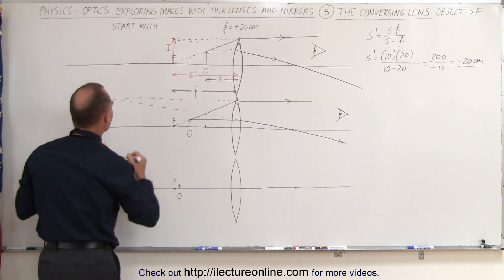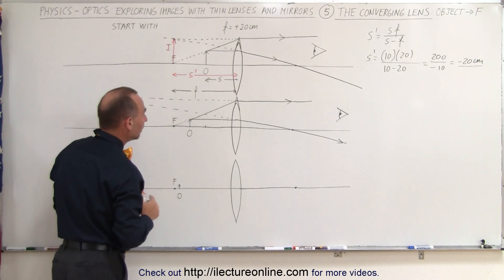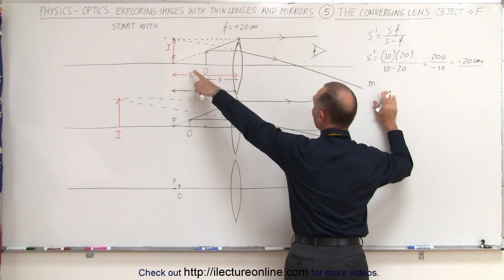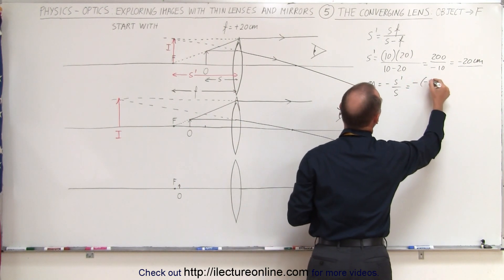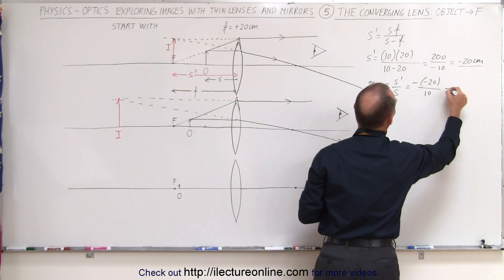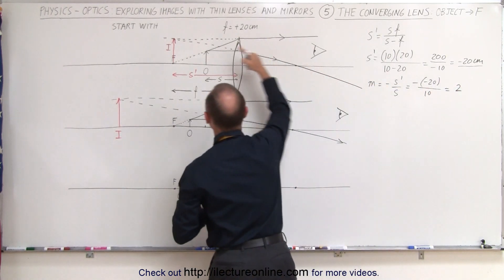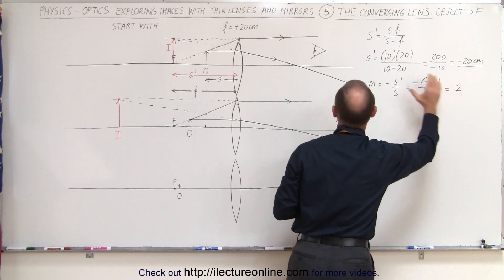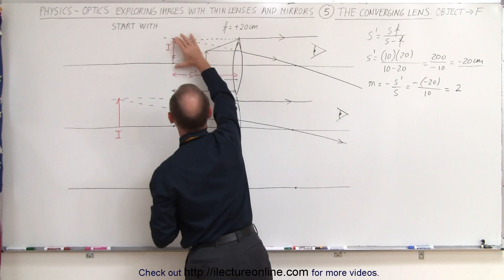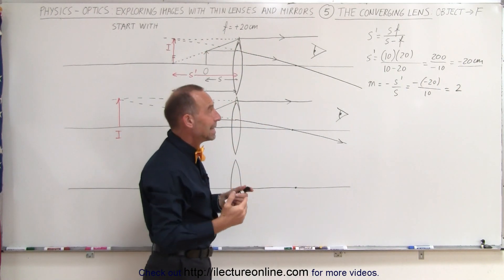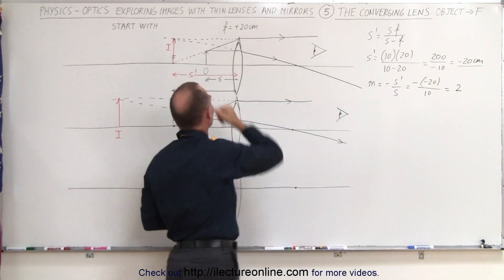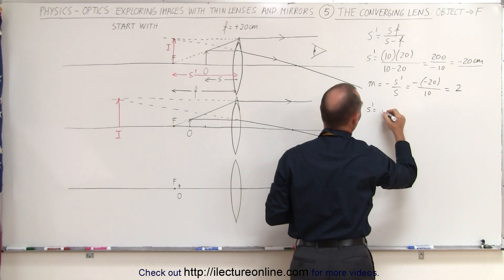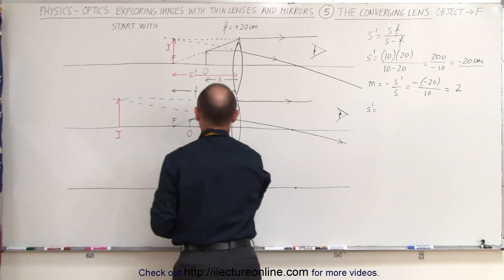We'll see that in just a moment when we do the third case. What I didn't do yet on the first drawing is calculate the magnification of that image, so let's do that now. The magnification of the image in case one is equal to minus S' over S, which is minus a minus 20 divided by S which is 10, which gives us a magnification of 2 to 1. That means the image size is twice the object size, and since it's a positive quantity that means it's upright — the same direction as the object. What makes it a virtual image is because this is a negative quantity, placing it in front of the lens.